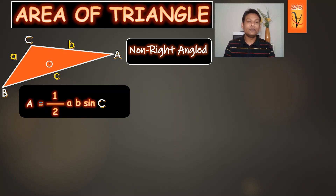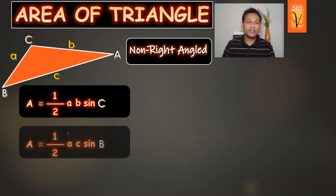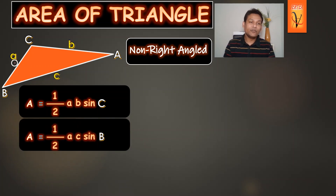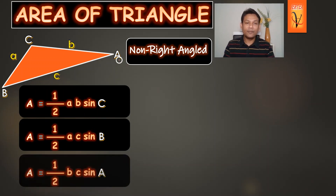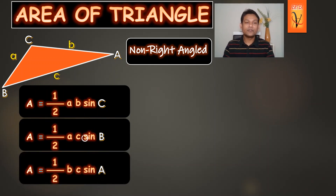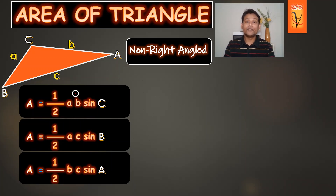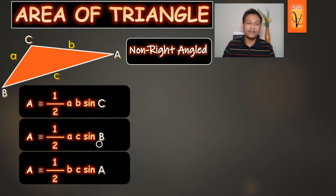When we use sides B and C, the included angle will be A. When we use sides A and C, the included angle will be B. This is the way the formula works for non-right angle triangles. It involves further trigonometry, using a calculator to get the values of sin A, sin B, and sin C.